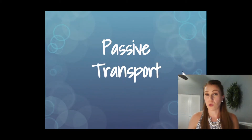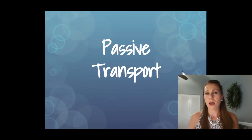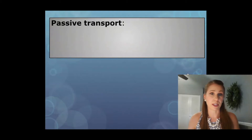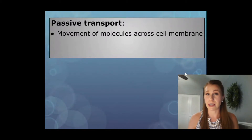They want to make sure that everything is correct, and when they are missing something or have too much of something, they need to transport it out of the cell or into the cell in order to maintain homeostasis. Passive transport is the movement of molecules across the cell membrane without the use of ATP energy. No energy is required for this process.